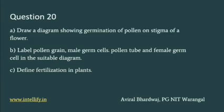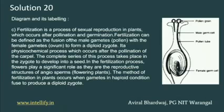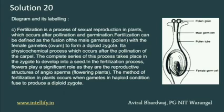The third question is about fertilization in plants, and the solution with a plant diagram is given on the right side. Go through and learn this diagram perfectly. The upper part shows pollen grains, the middle part of the small tube shows male germ cells, the thicker tube is the pollen tube, and the center of the plant shows the female germ cells. These are the important parts of the flower.